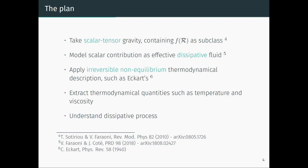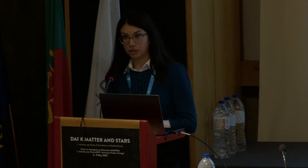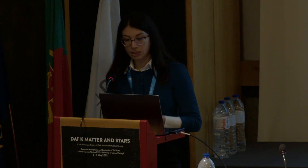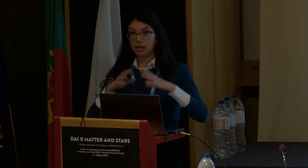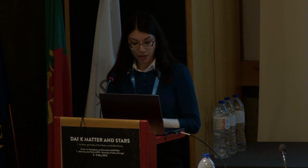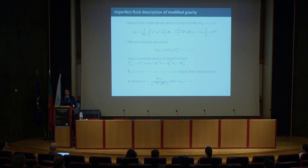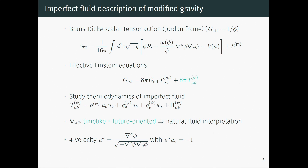We take the scalar contribution to the effective stress-energy tensor, isolate all the contributions that have to do with the scalar field, and then take this fluid seriously as a fluid and apply an irreversible non-equilibrium thermodynamical description to it, such as the one developed by Eckert. This way we can extract thermodynamical quantities such as temperature and viscosity and understand this dissipative process. We're dealing with the Brans-Dicke scalar-tensor action in the Jordan frame — very generic. We write the effective Einstein equations and isolate all the terms containing phi. The only assumption needed is that the gradient of our scalar field is time-like and future-oriented, so we can have a natural fluid interpretation with a well-defined velocity.